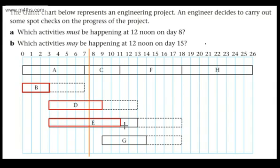And then we've got activity E. Again, another non-critical activity. And then we've got activity G. So what we're going to do from here now is look at which activities must be happening at 12 noon on day 8.